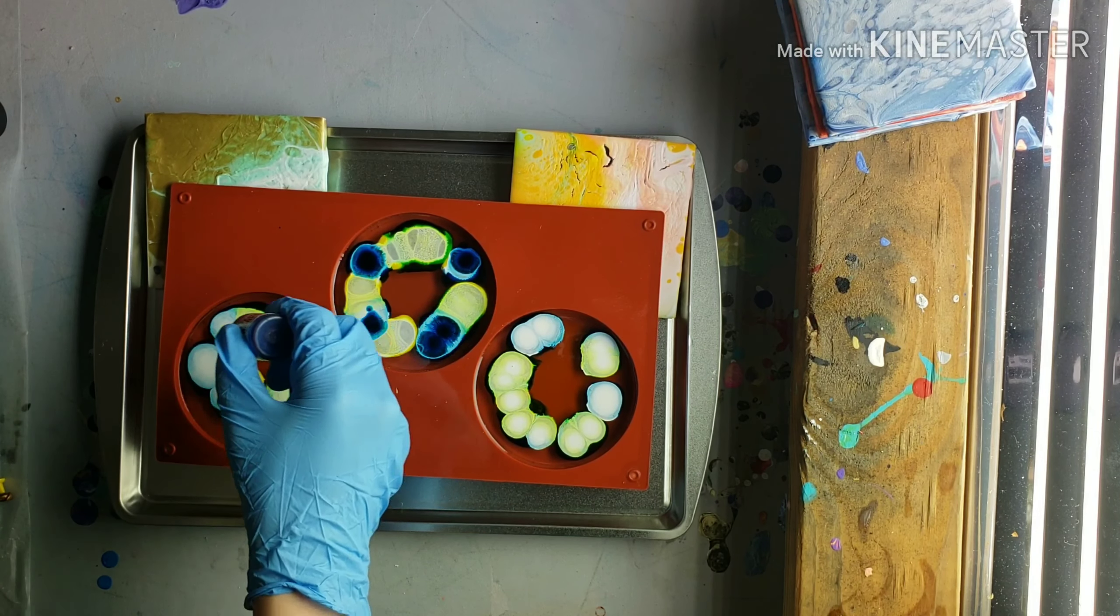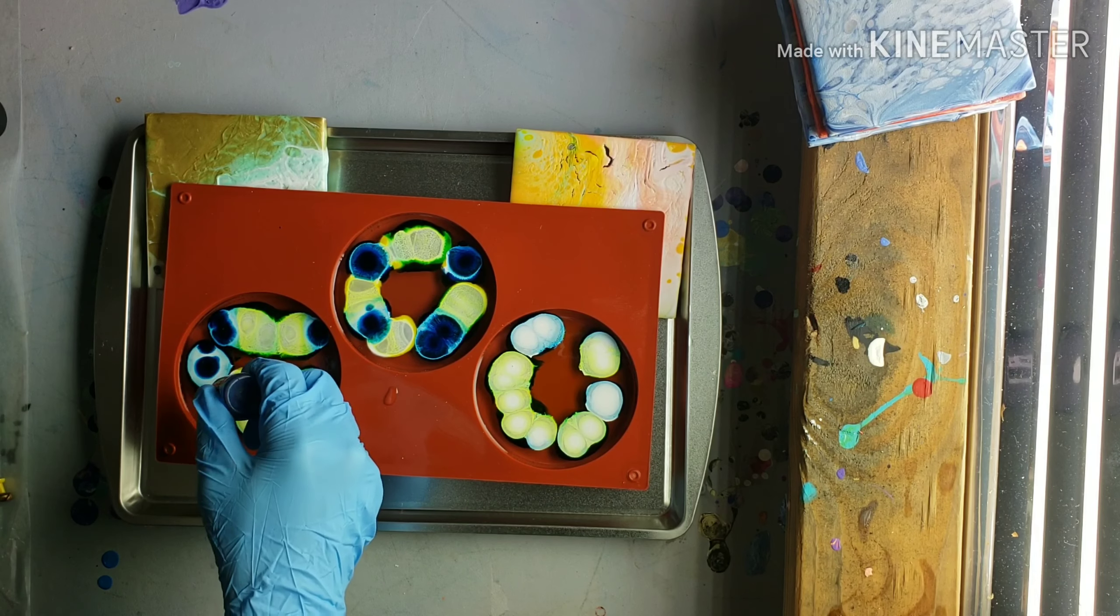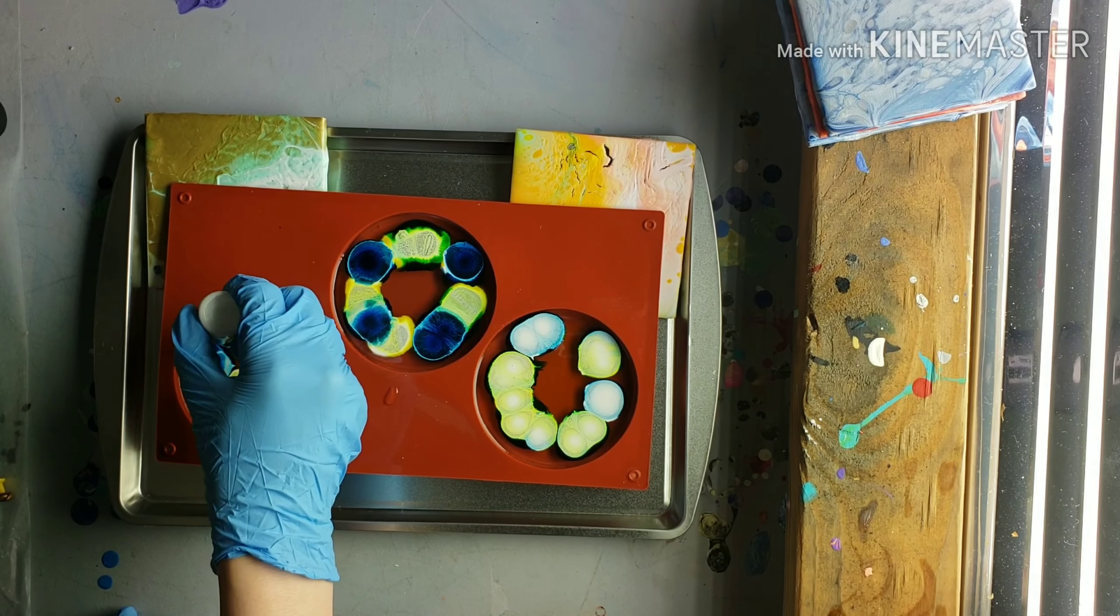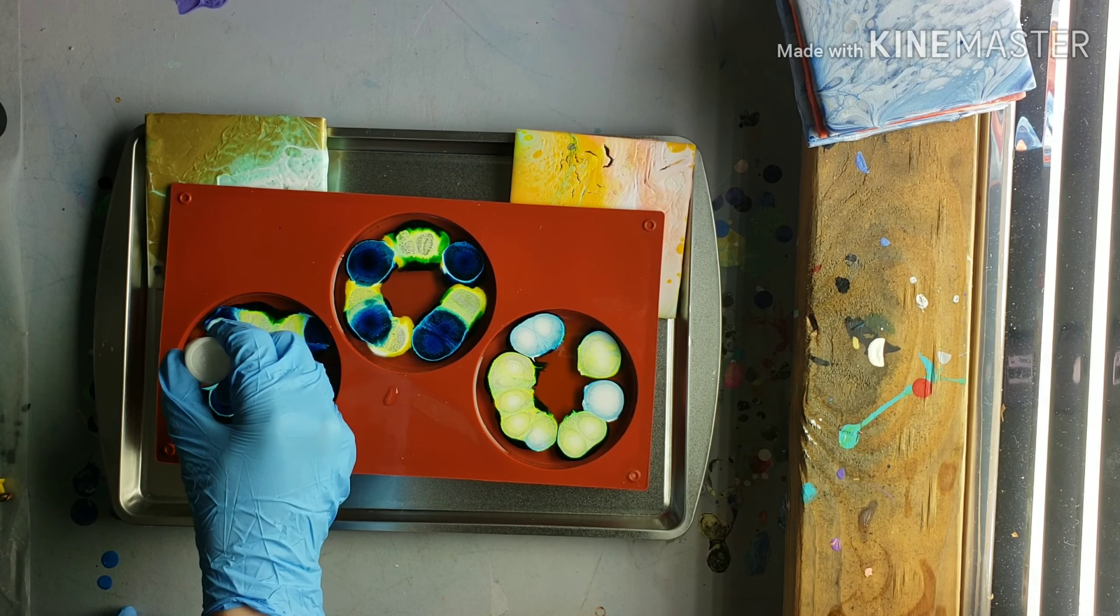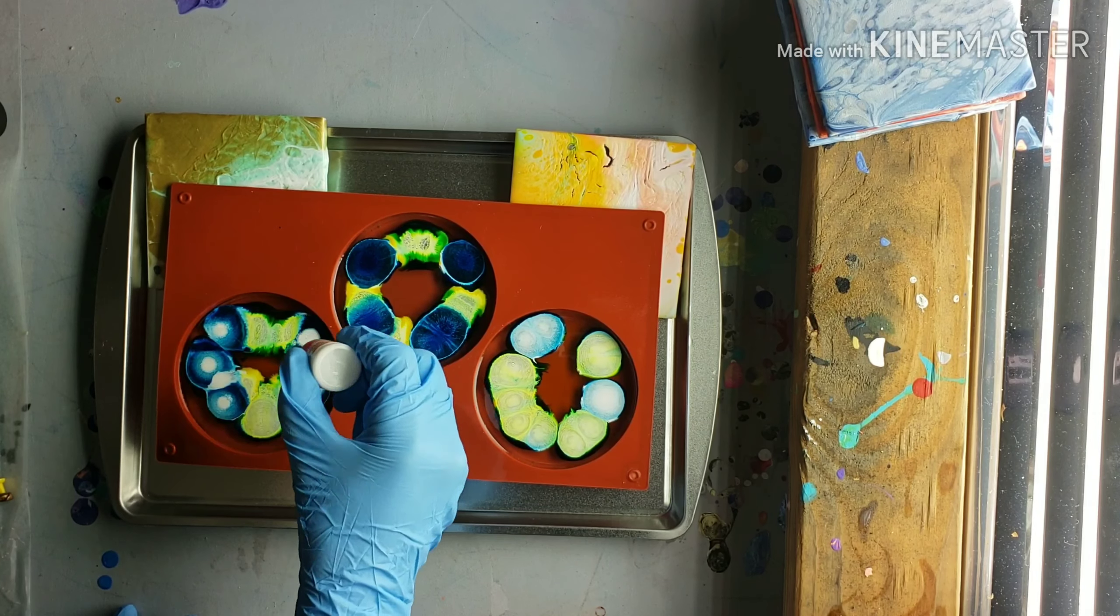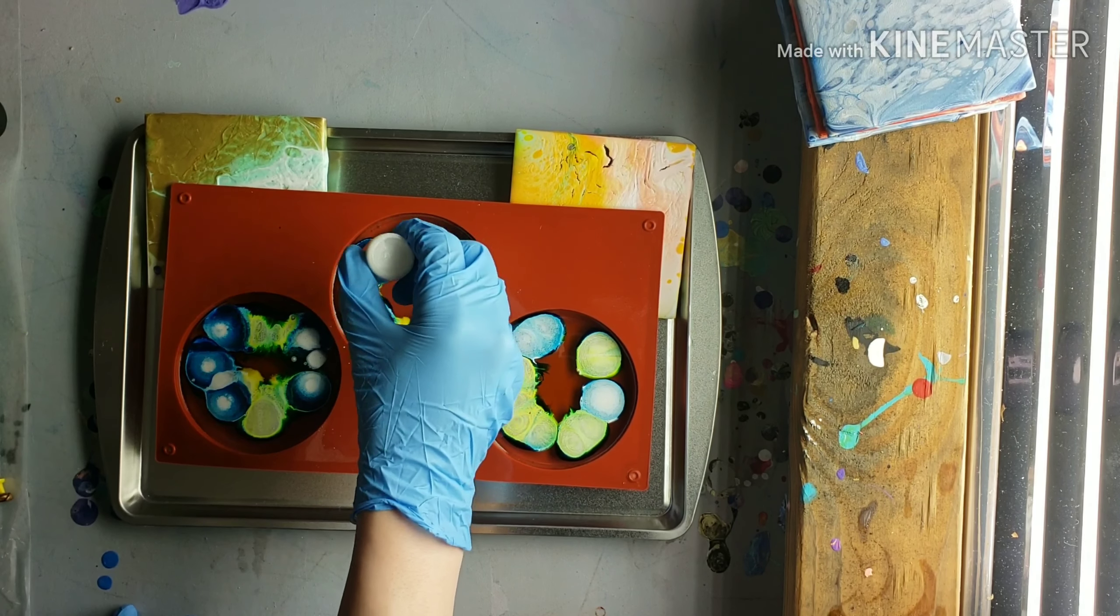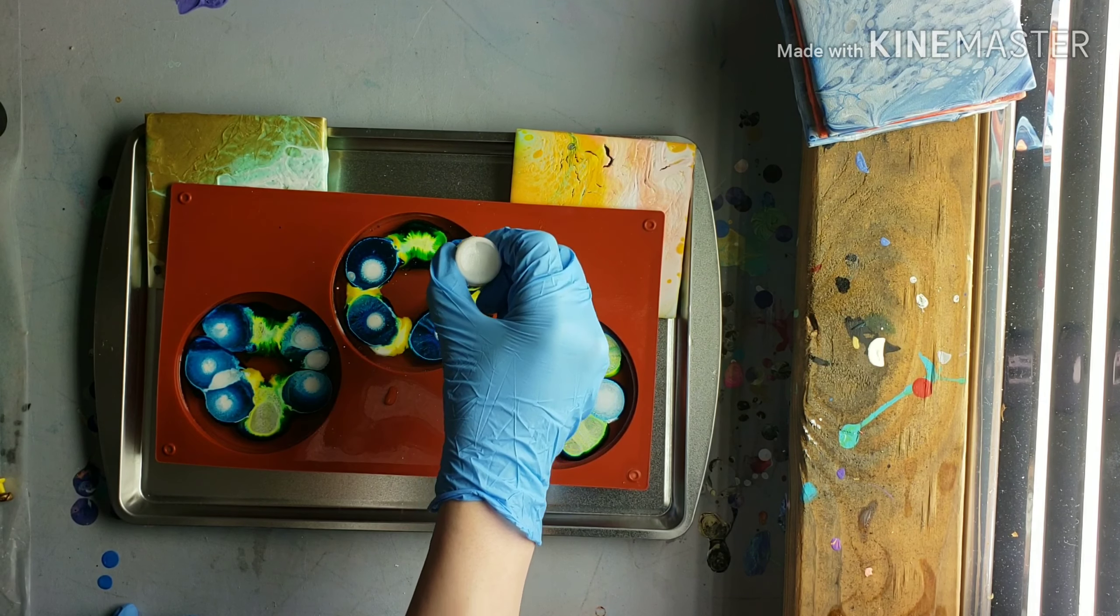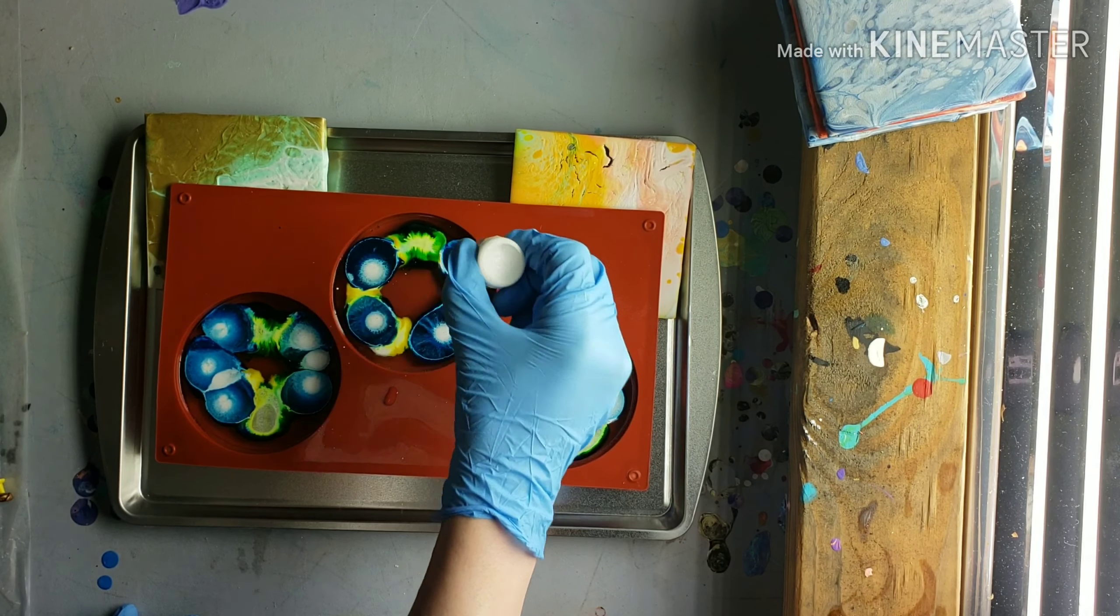Now I'm going to go back in with my blue and I'm going on top of the white and adding another drop of blue. And I'm going to do the same thing with the yellow. I like to do this three times. So I'll do color, white, color, color, white, color, color, white, color. And then that's it for my molds. I usually just pick my colors and I'll do, you know, three layers and that's it.